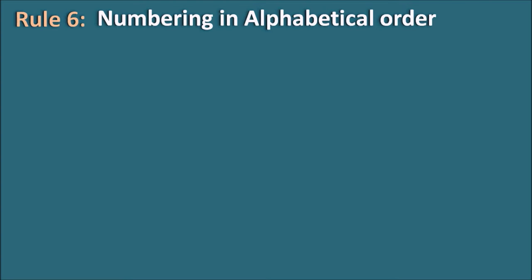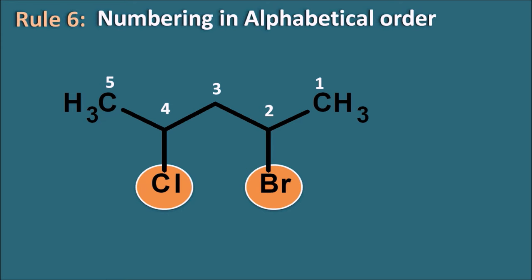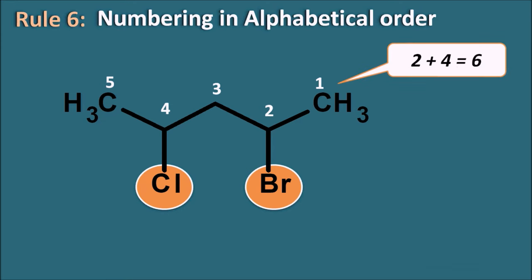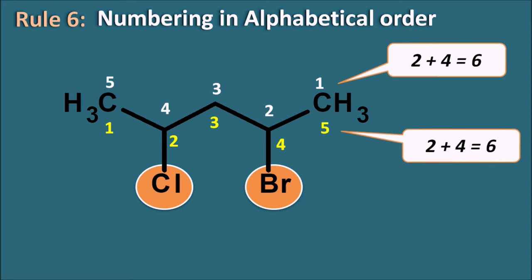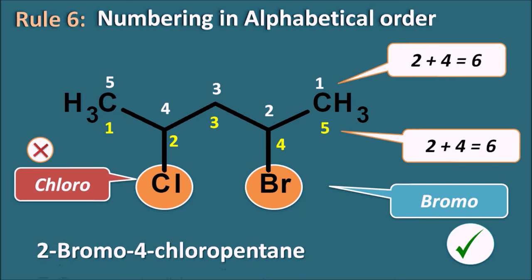For Criteria 2 (alphabetical order): a structure with chlorine and bromine where both directions give locant sum 2+4=6. Since bromine (B) comes before chlorine (C) alphabetically, the numbering giving the least locant to bromine is correct. The name is 2-bromo-4-chloropentane.